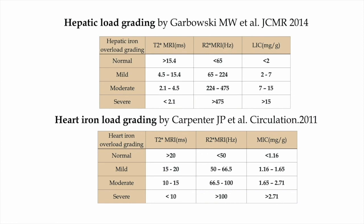These are the different grades for the liver and the heart, divided into mild, moderate, and severe categories based on T2 star and R2 star values.